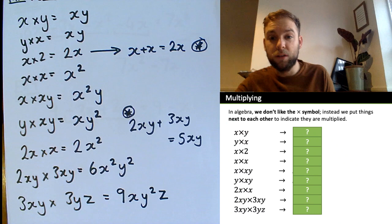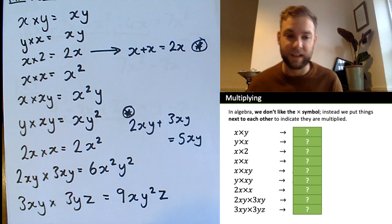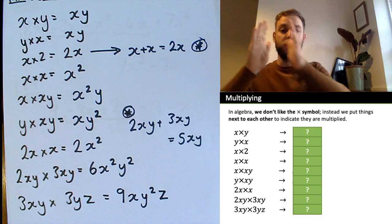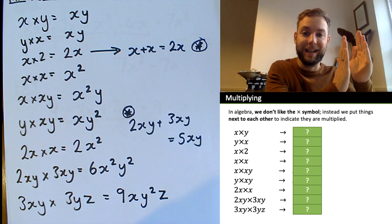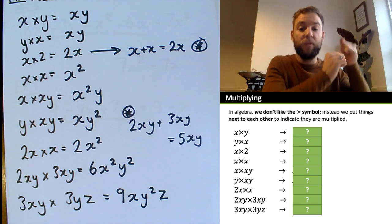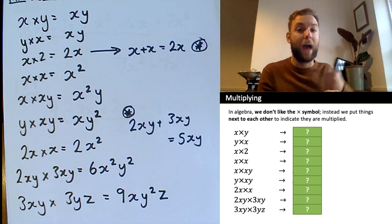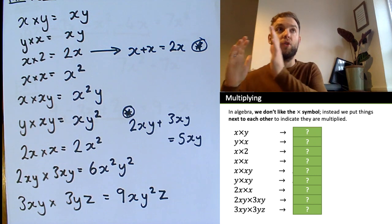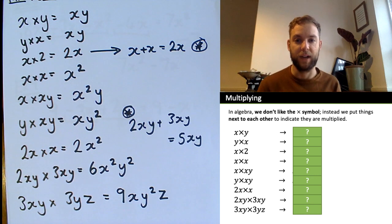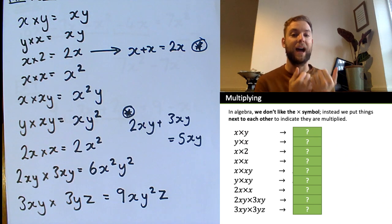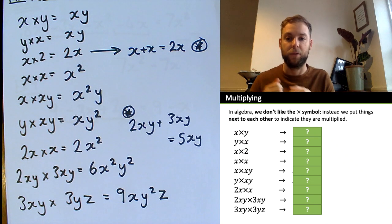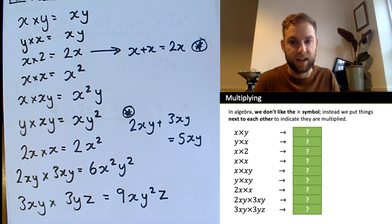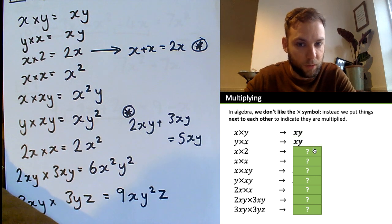With addition, we think of like terms as names — 2x plus 3x equals 5x's. With multiplication, 2x times 3x means 2 times 3 equals 6, x times x equals x squared, giving 6x squared. These are completely separate techniques and it's important to know the difference.